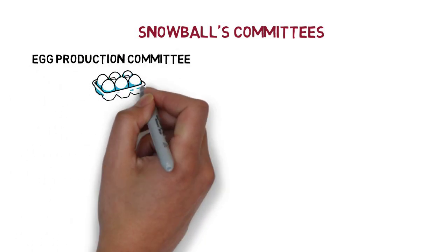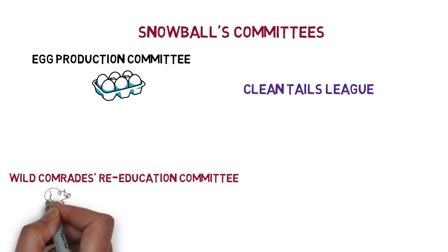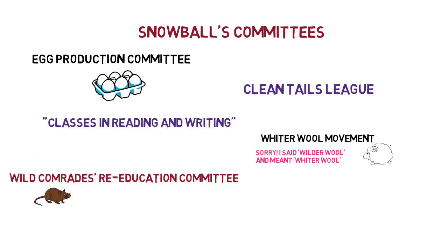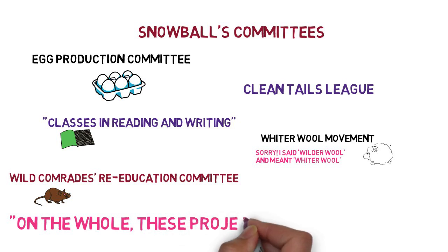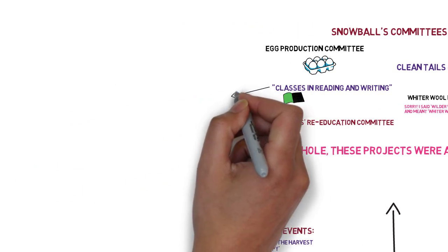Snowball's committees include the Egg Production Committee, the Clean Tails League, the Wild Comrades Re-education Committee, the Wild Wool Movement, and classes in reading and writing — but on the whole these projects were a failure. These committees represent the idea that surface-level bolt-on projects cannot solve the deeply rooted political problems of the farm. We also see a clear distinction between Napoleon and Snowball here: Napoleon thinks these committees are a waste of time and sets about training the nine puppies, already mobilising his forces to expel Snowball. Orwell shows the deep divide between the two leaders, perhaps prompting the question as to whether it's ever possible for two pigs — or people — to hold power.